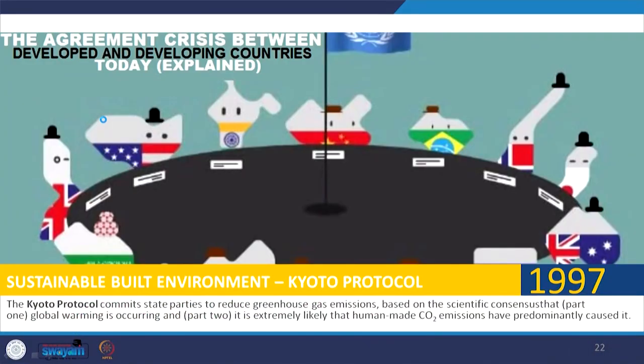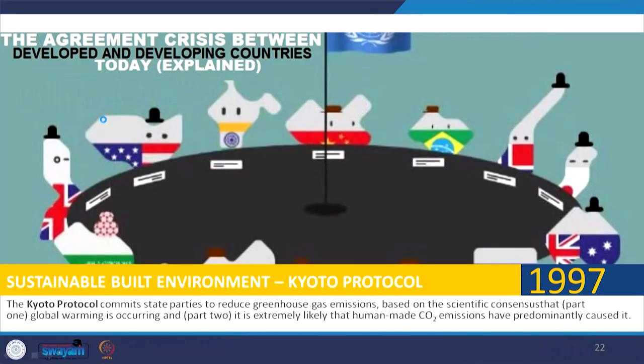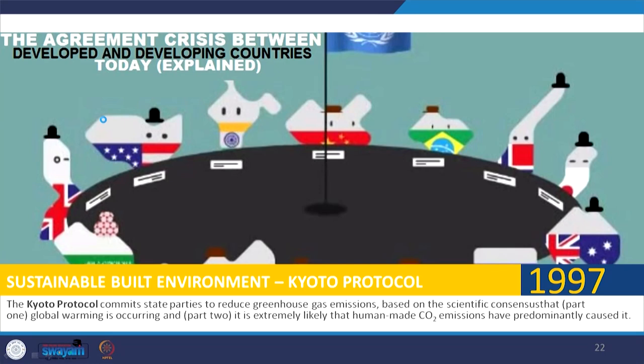In 1997, the Kyoto Protocol was proposed. Though it was not very successful in bringing all countries together till date, it was identified that global warming is occurring and the world needs to reduce its greenhouse gas emissions. Several countries have already signed the Kyoto Protocol, banned the use of certain compounds and certain processes, and committed to reduce greenhouse gas emissions. The work on the Kyoto Protocol is still going on, but it was a historic moment where the world recognized that greenhouse gas emissions need to be curtailed and cut down.